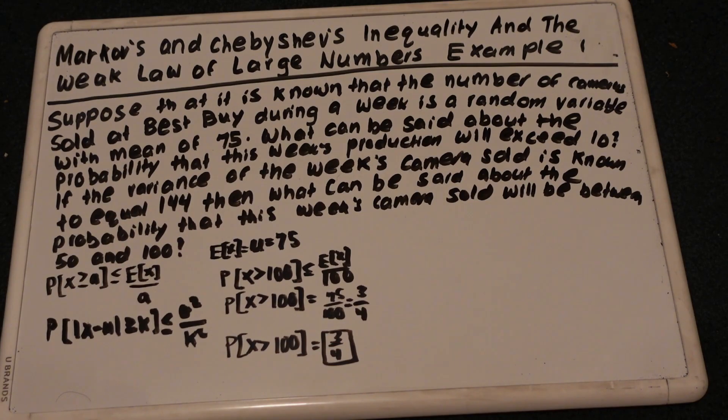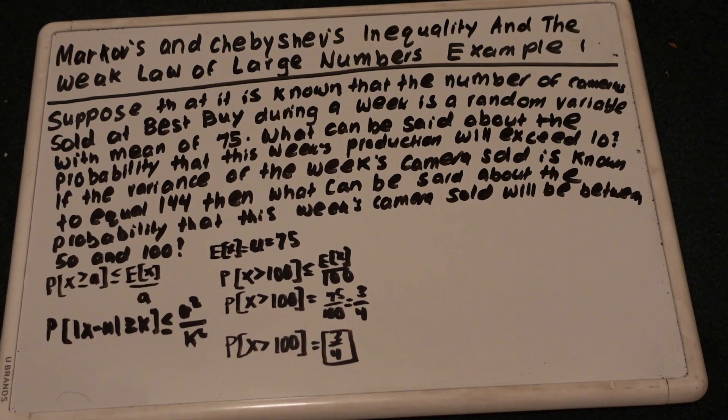So let's figure out the next question in this problem. If the variance of the week's cameras sold is known to equal 144, then what can be said about the probability that this week's cameras sold will be between 50 and 100? So let me set this up.